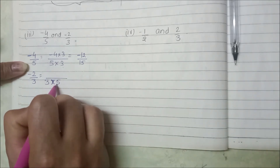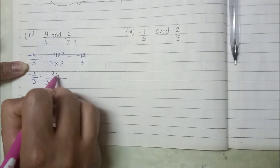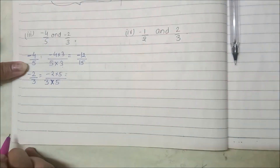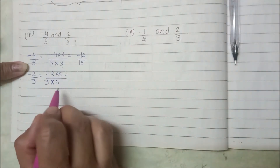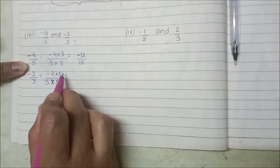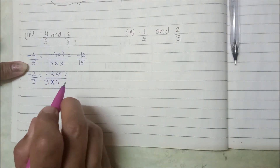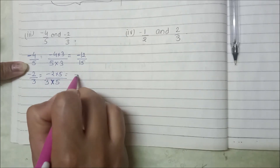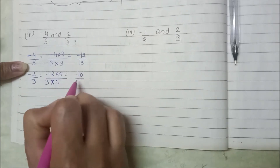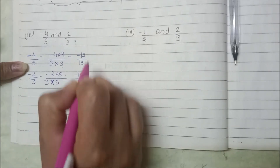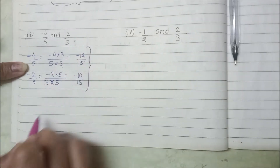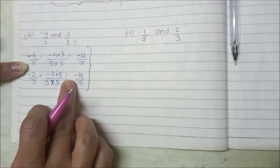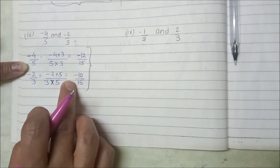15 should come to the denominator, so we will multiply by 3 for the first fraction and by 5 for the second. So we get minus 10 by 15. Now we will get these numbers, but between these numbers we need to get 5 rational numbers.